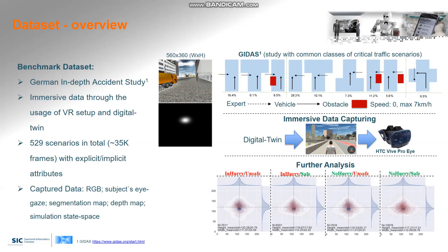Moreover, the provided visualization of context-based eye gaze distributions are in line with empirical studies, where subjects tend to look further away in the case of an in-hurry unsafe setup to look for more potential hazards like approaching vehicles.